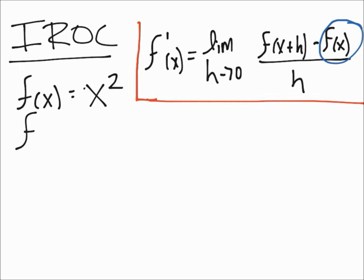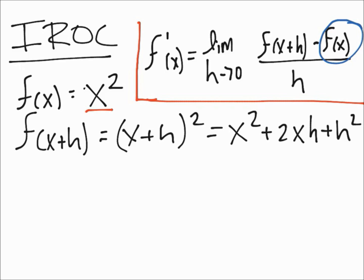The way you do that is you just change this x into x plus h, so it will be (x+h)² and that is x² + 2xh + h². So now we have our f(x) and our f(x+h), and h is just h, so we can just plug in the values in the formula.